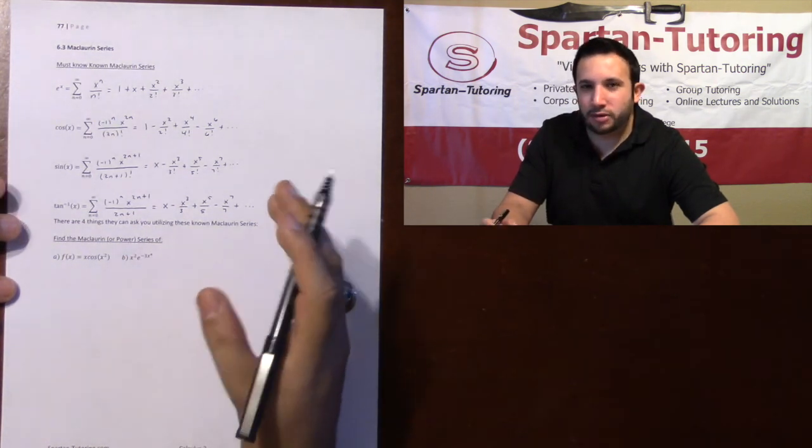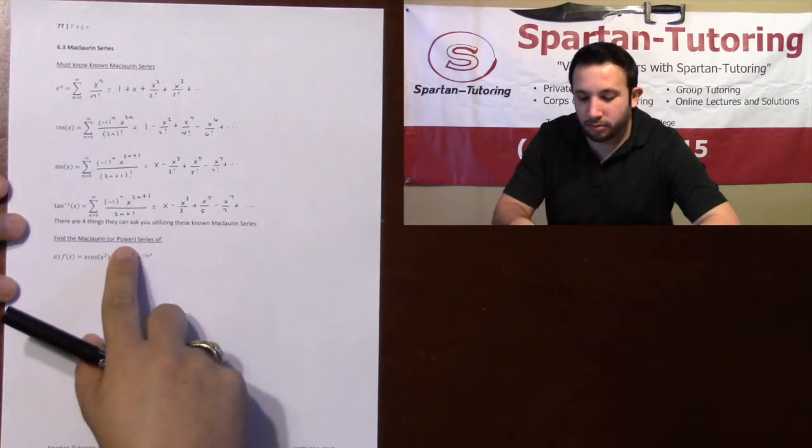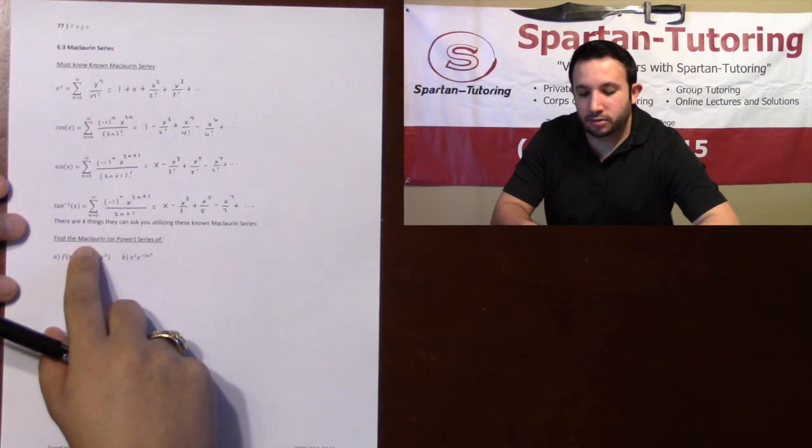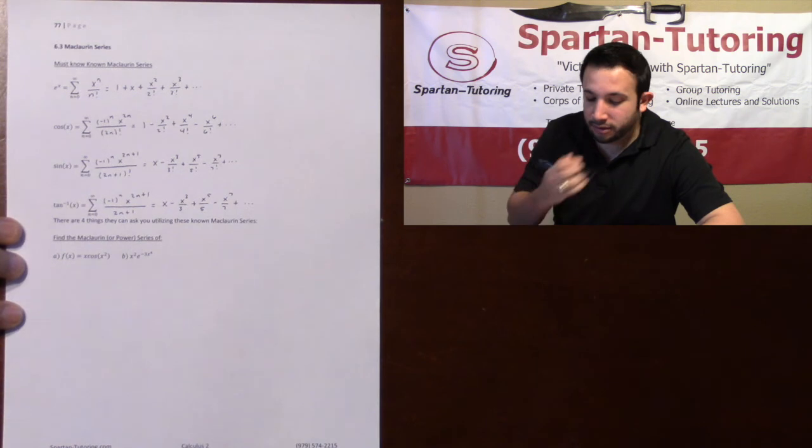A Maclaurin series is just a special power series. Kind of like how every square is a rectangle, but not every rectangle is a square. Power series are the rectangles, Maclaurin series are the squares. Okay, so now that we've got that out of the way, let's take a look at this.